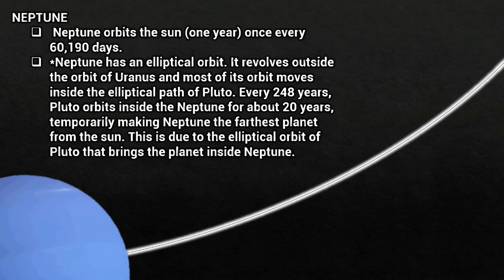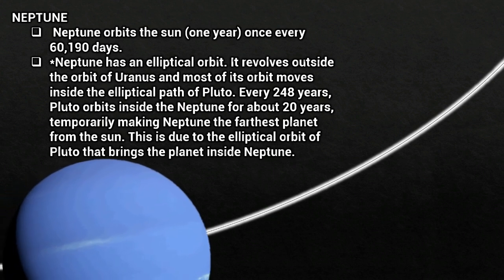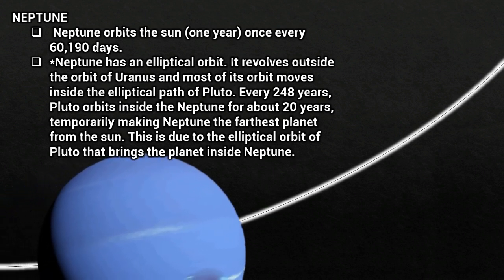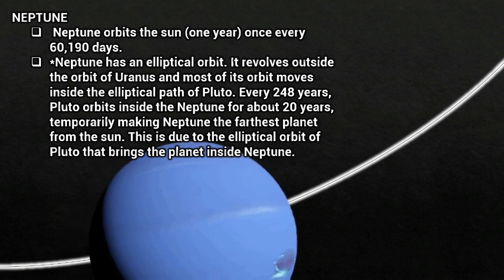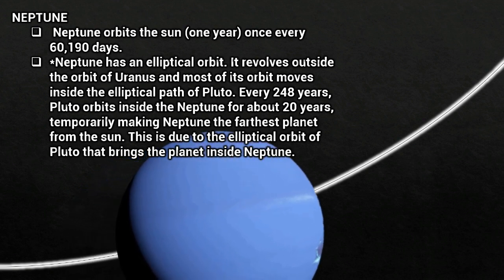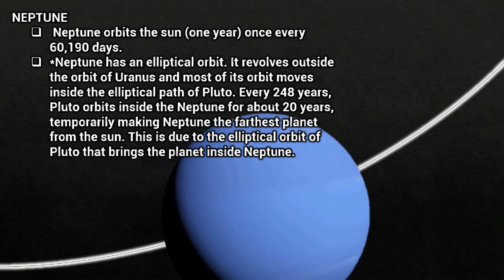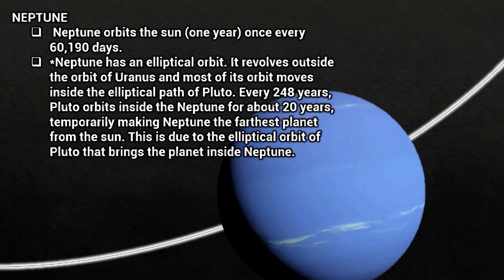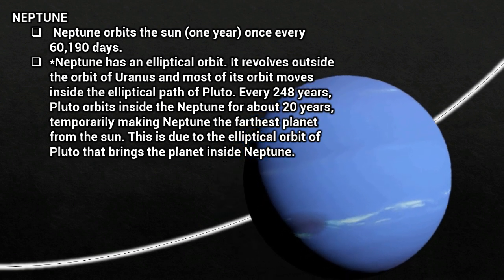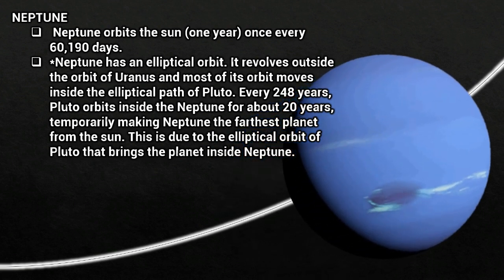Neptune orbits the Sun once every 60,190 days. Neptune has an elliptical orbit. It revolves outside the orbit of Uranus, and most of its orbit moves inside the elliptical path of Pluto. Every 248 years, Pluto orbits inside Neptune's orbit for about 20 years, temporarily making Neptune the farthest planet from the Sun.